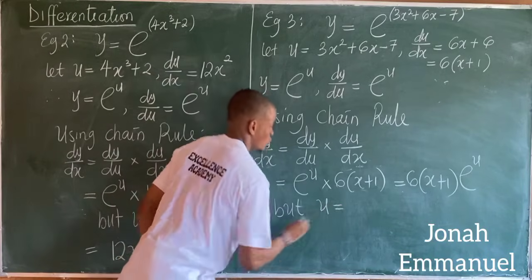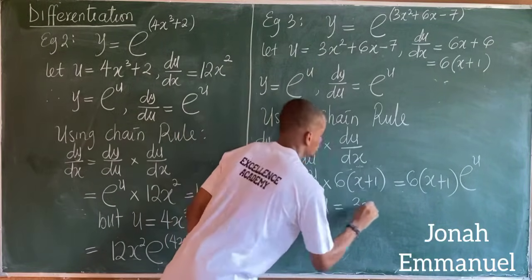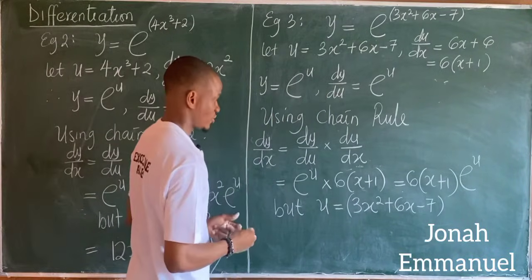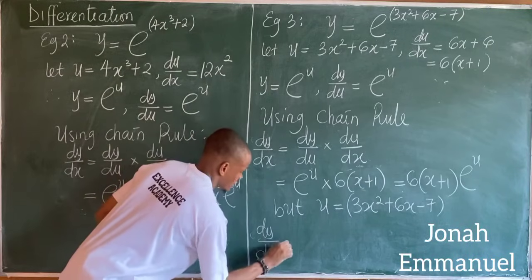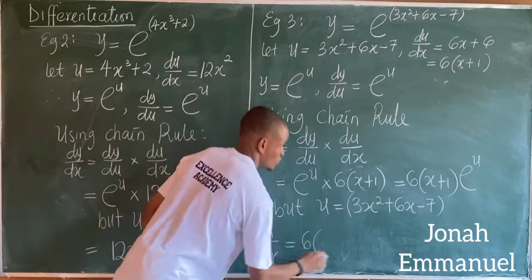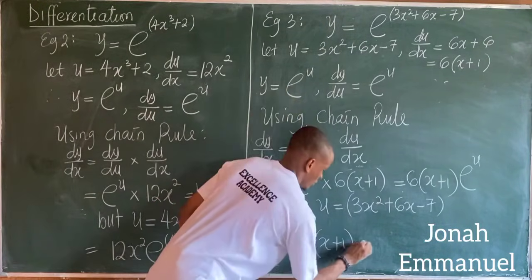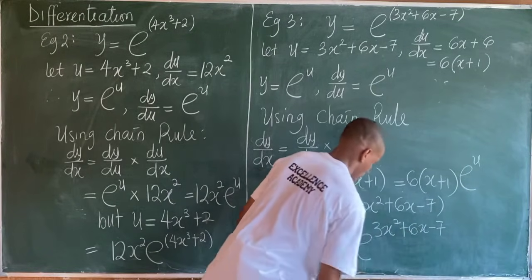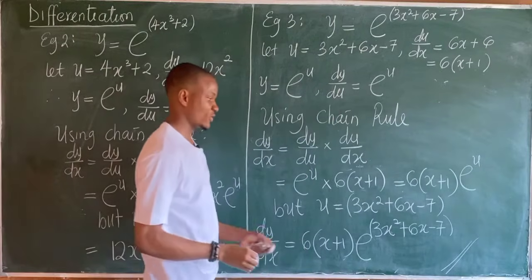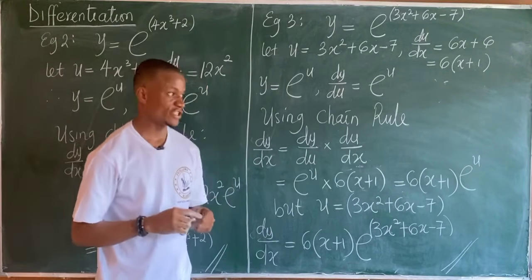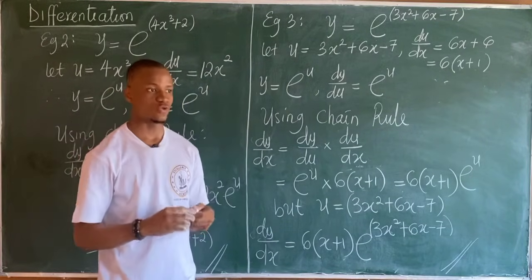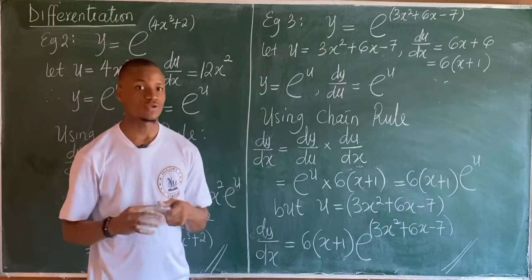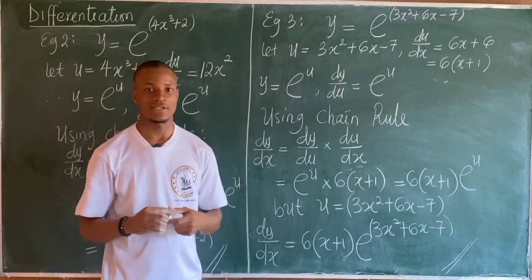But we said that u is equal to 3x squared plus 6x minus 7. So dy over dx is now equal to 6 into x plus 1 into exponential of 3x squared plus 6x minus 7. So I'm having this as the result of differentiating exponential functions. In the next video, I will show you a shortcut to differentiating exponential functions. We'll look at that in the next class.